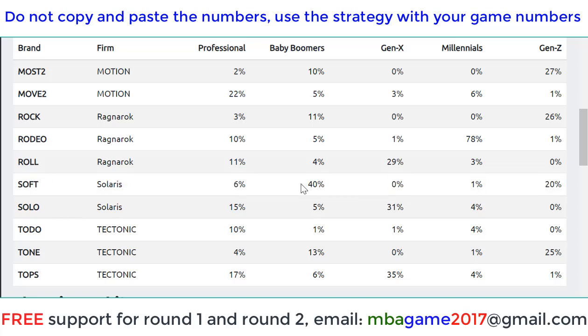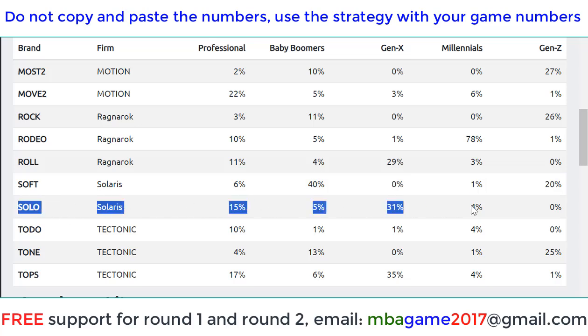For example, taking the Soft product — you can see that 40% purchase intention is from Baby Boomers and 20% from Gen Z. So the target market for Soft is Baby Boomers and Gen Z. And if you check the Solo product, you see the Professional segment here.